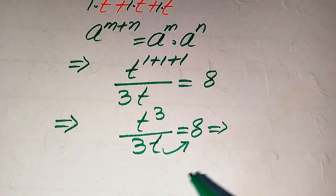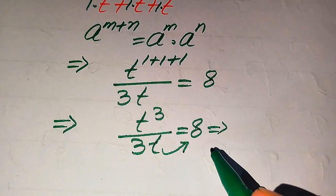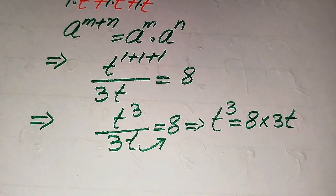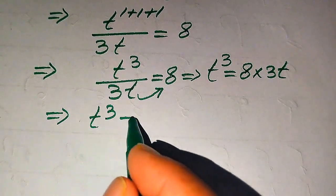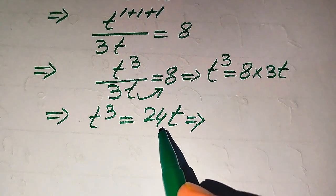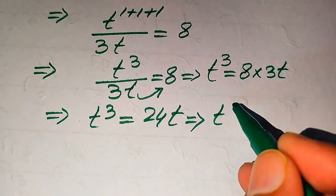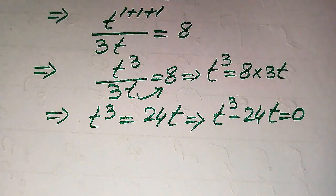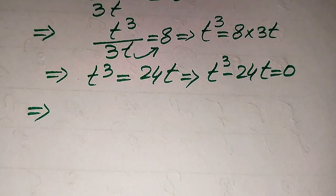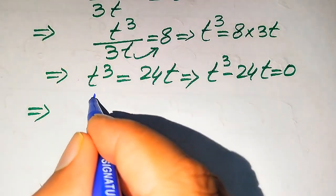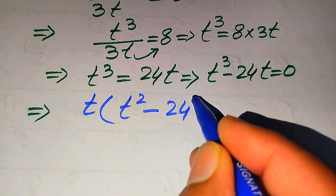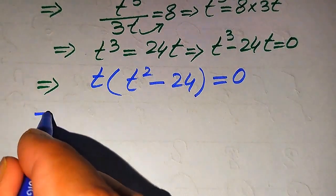In the next step we move 3t to the right hand side. Since it was dividing on the left hand side, it multiplies on the right hand side, giving t cubed equals 8 multiplied by 3t, which is 24t. Moving 24t to the left hand side gives t cubed minus 24t equals zero. Both terms involve t, so t is a common factor. Taking out t, we get t times (t squared minus 24) equals zero.